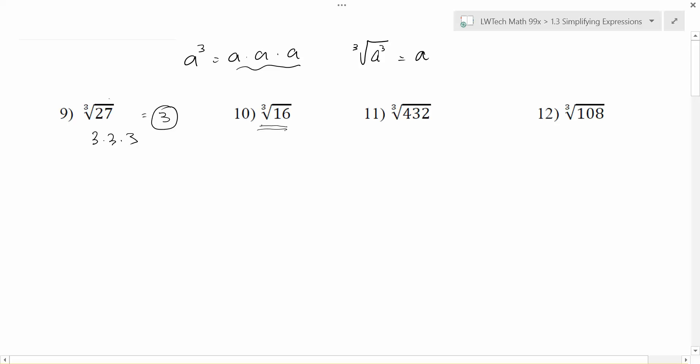How we do that is actually very similar to what we did with square roots. The easiest way to guarantee that you find all the factors you need is to go and actually find the prime factors. For example, if we think of 16, 16 is 4 times 4. 4 can get broken down into 2 times 2 here and 2 times 2 here.